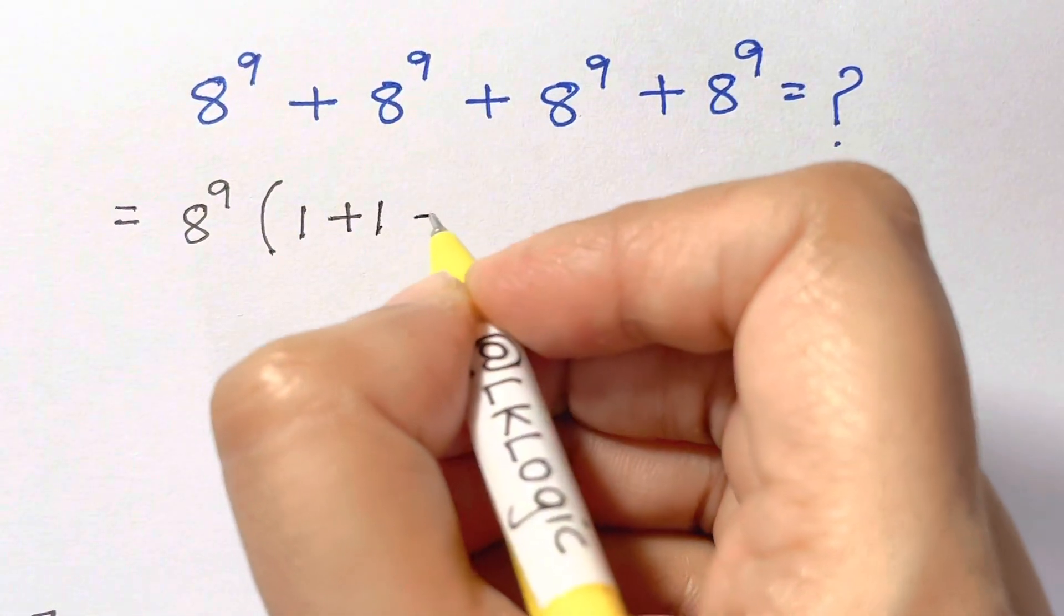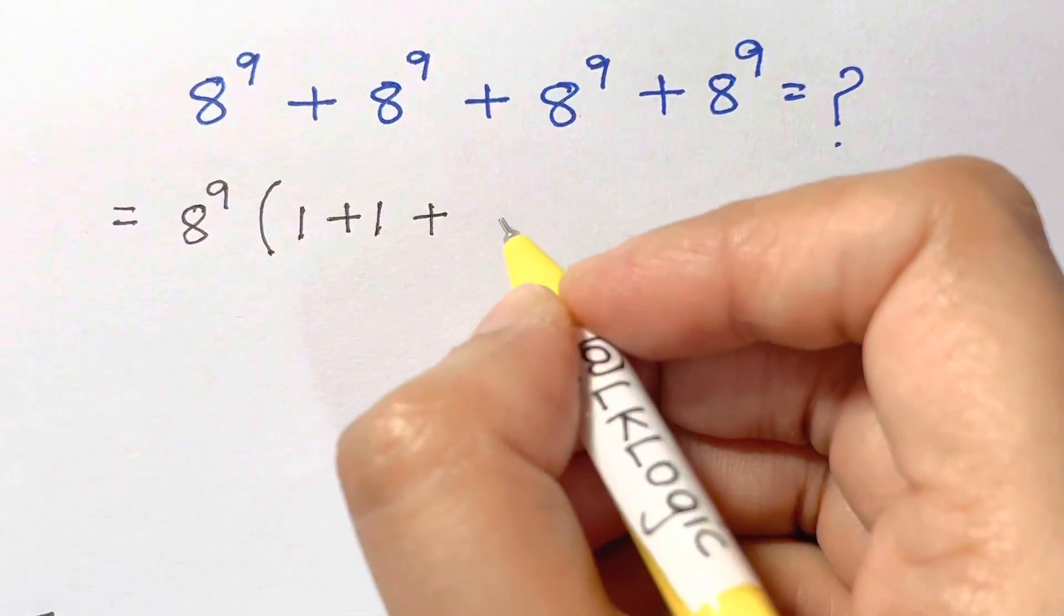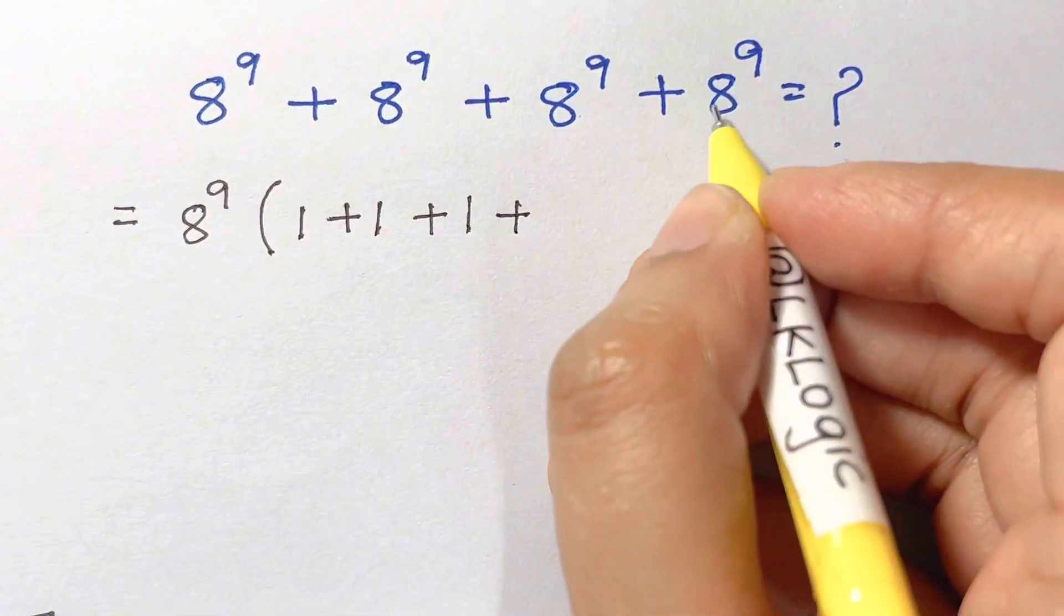Again, 8 to the power of 9 divided by 8 to the power of 9 is 1. 8 to the power of 9 divided by 8 to the power of 9 is 1 and plus 1 again.